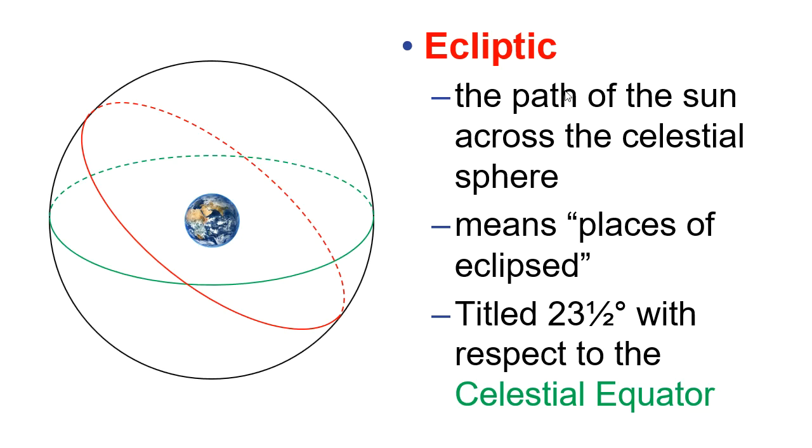From our perspective, it looks like the sun is going across the celestial sphere. And this red curve that you see here is tilted a little bit with respect to the green one, which is the celestial equator. So this angle right here, 23 and a half degrees between the celestial equator and the ecliptic. The reason it's 23 and a half degrees is because the Earth's axis is tilted 23 and a half degrees.